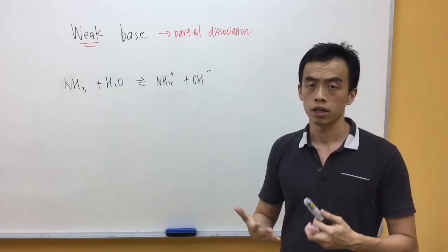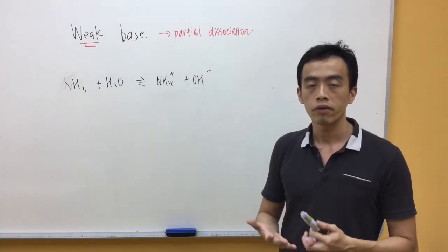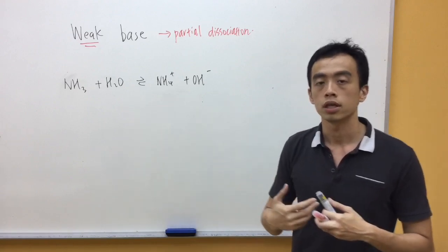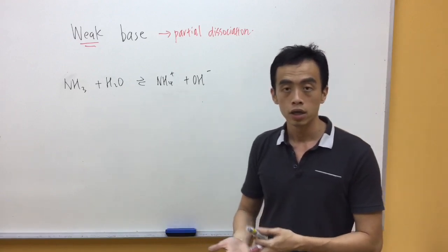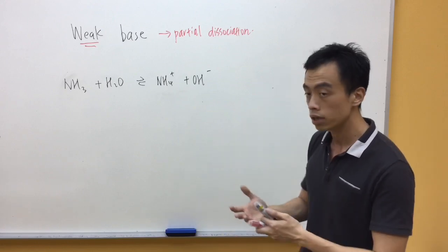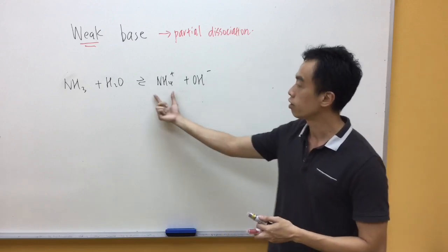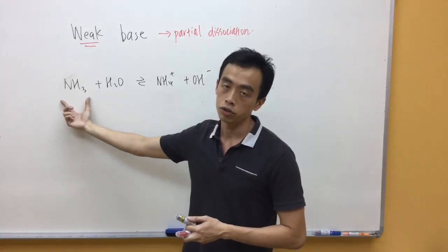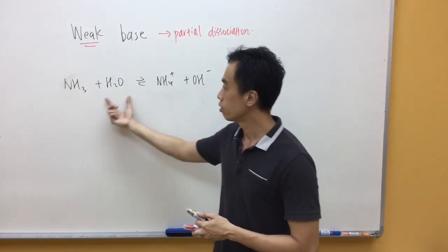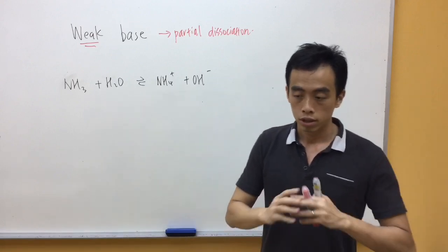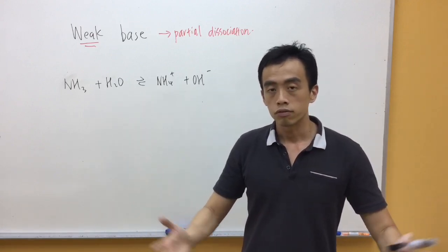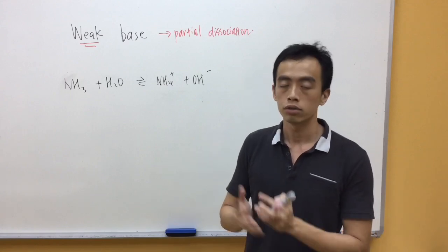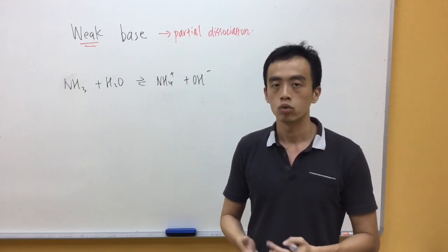Now, again, since this is a system in equilibrium, I can write out equilibrium constant associated with this particular equilibrium. Because this is an equilibrium constant for a weak base, we just represent this as Kb. Kb will just be the concentration of NH4+, multiplied by the concentration of OH- divided by concentration of ammonia NH3. Now, the water will not be in the equation because everything is dissolved in solution. We have a large excess of water. The concentration of water is a constant. So, therefore, it will be incorporated into my Kb.